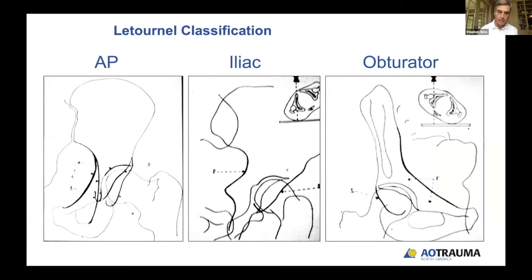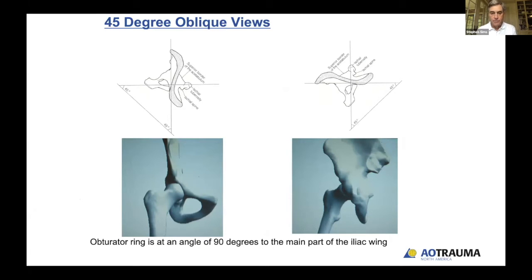The three radiographs we standardly get are the AP view, the iliac oblique view where we roll the opposite side up, and the obturator oblique view where we roll the injured side up. This was not by random chance — the obturator ring is at a 90-degree angle to the main part of the iliac wing, and both are at a 45-degree angle from the true anterior plane. Rolling the patient gives us a frontal view of the obturator ring and a tangential view of the iliac wing, or vice versa — essentially AP and lateral views of the two main portions of the pelvic ring that house the acetabulum.